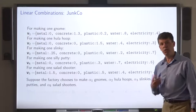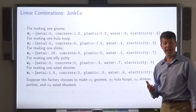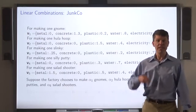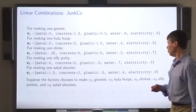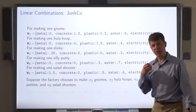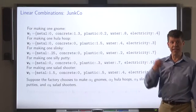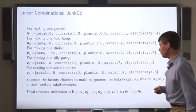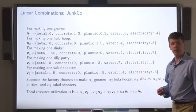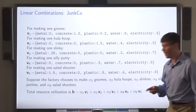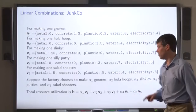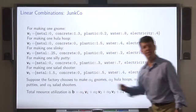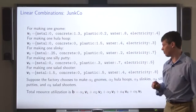Suppose the factory decides to make alpha 1 garden gnomes, alpha 2 hula hoops, and so on. Then the total amount of each of the resources is specified by a vector that can be expressed as a linear combination of the vectors v1 through v5.